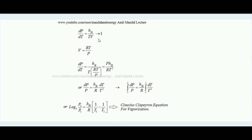Furthermore, if we consider the converted vapor as an ideal gas, then PV = RT, so V = RT/P. Substituting V = RT/P into the equation gives dP/dT = P·HFG / (R·T²). Rearranging: dP/P = (HFG/R)·(dT/T²). Integrating both sides gives the final Clausius-Clapeyron equation: ln(P2/P1) = (HFG/R)·(1/T1 − 1/T2). This is the Clausius-Clapeyron equation for vaporization.